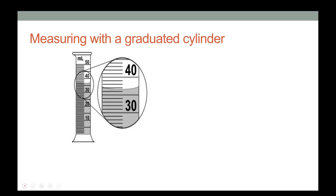Graduated cylinders measure the volume of liquids. If this one is labeled 30 milliliters at one mark and 40 milliliters at the next, each line represents one milliliter.